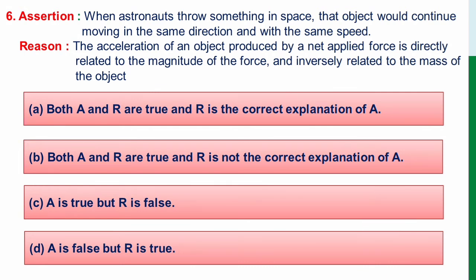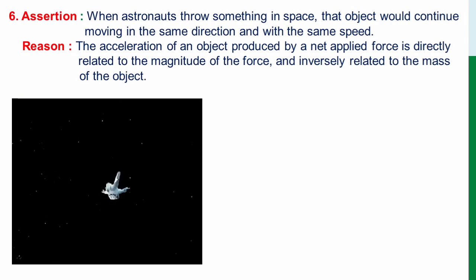So when an astronaut throws something in space, the astronaut is giving a force to that object. So according to Newton's first law, the object should move. And yes, it will continue to move in the same direction with the same speed until it gets hit or it gets a force from any other object. So assertion is true. Let's check the reason part.